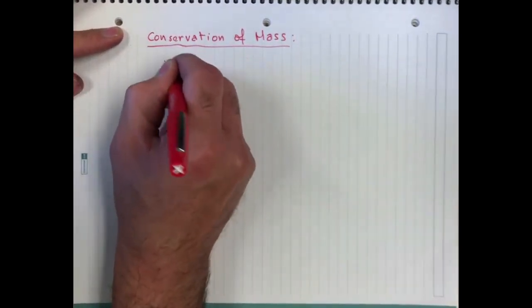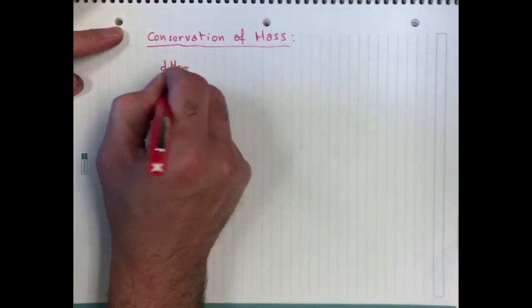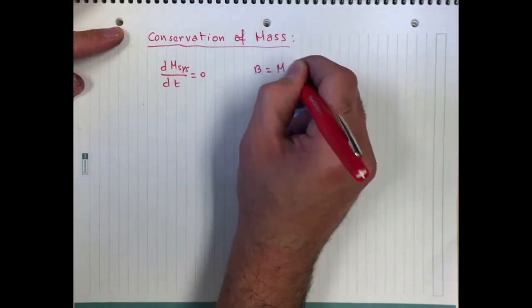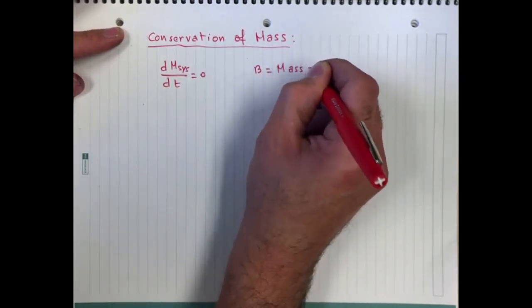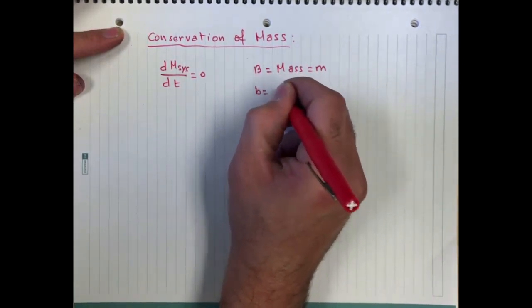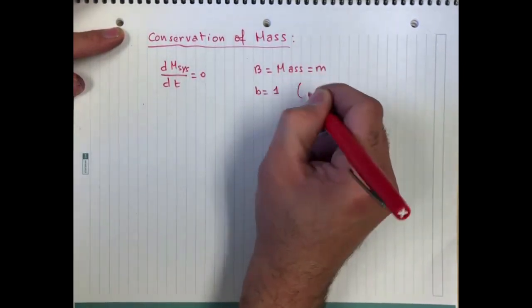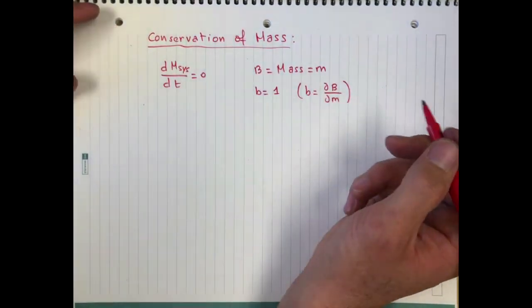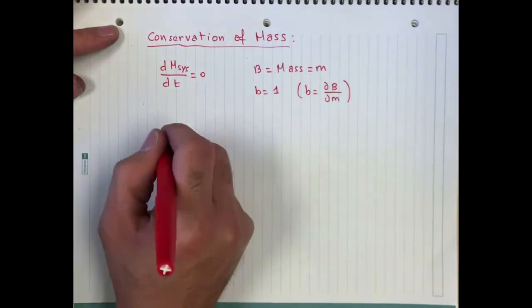That's simply dm_sys/dt equals zero. In this case, b is mass m and b is equal to 1. In other words, you can say b is equal dv/dm.